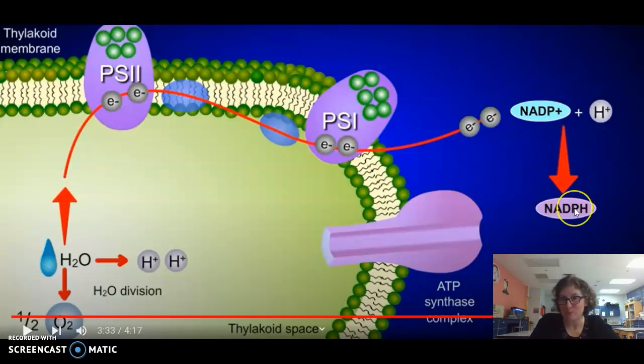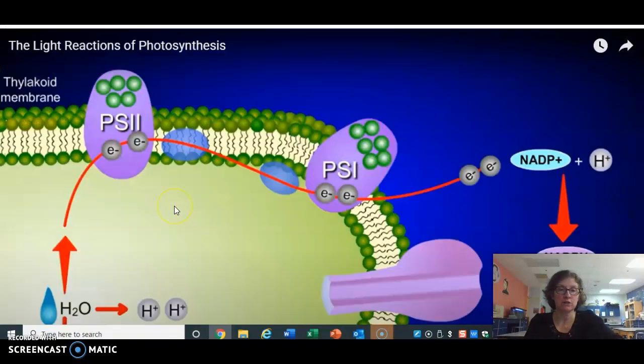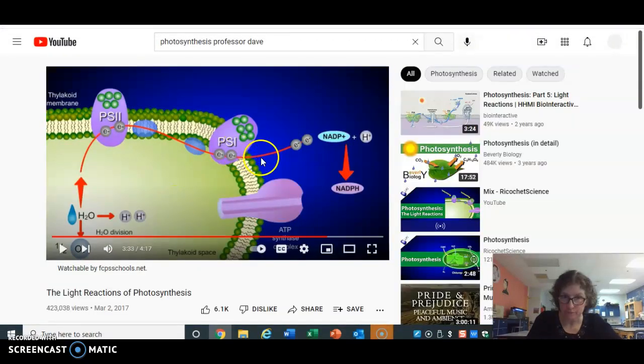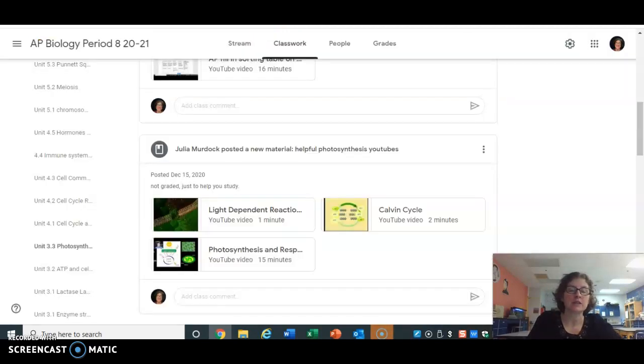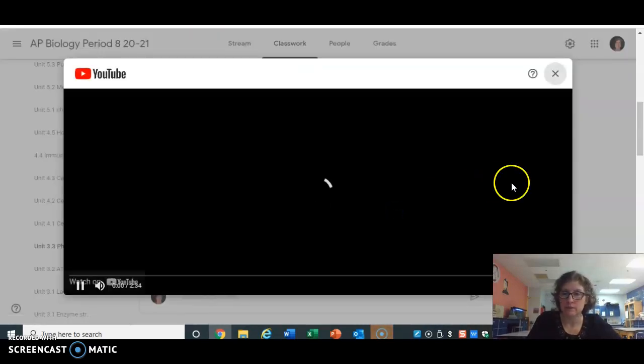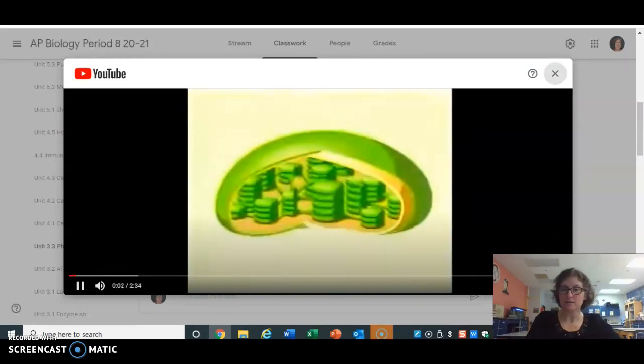The only difference between NADPH and NADH is that NADPH is only found in chloroplasts and it has a phosphate group attached to it. Now I'm going to go to the other second part of photosynthesis, which is the Calvin cycle.